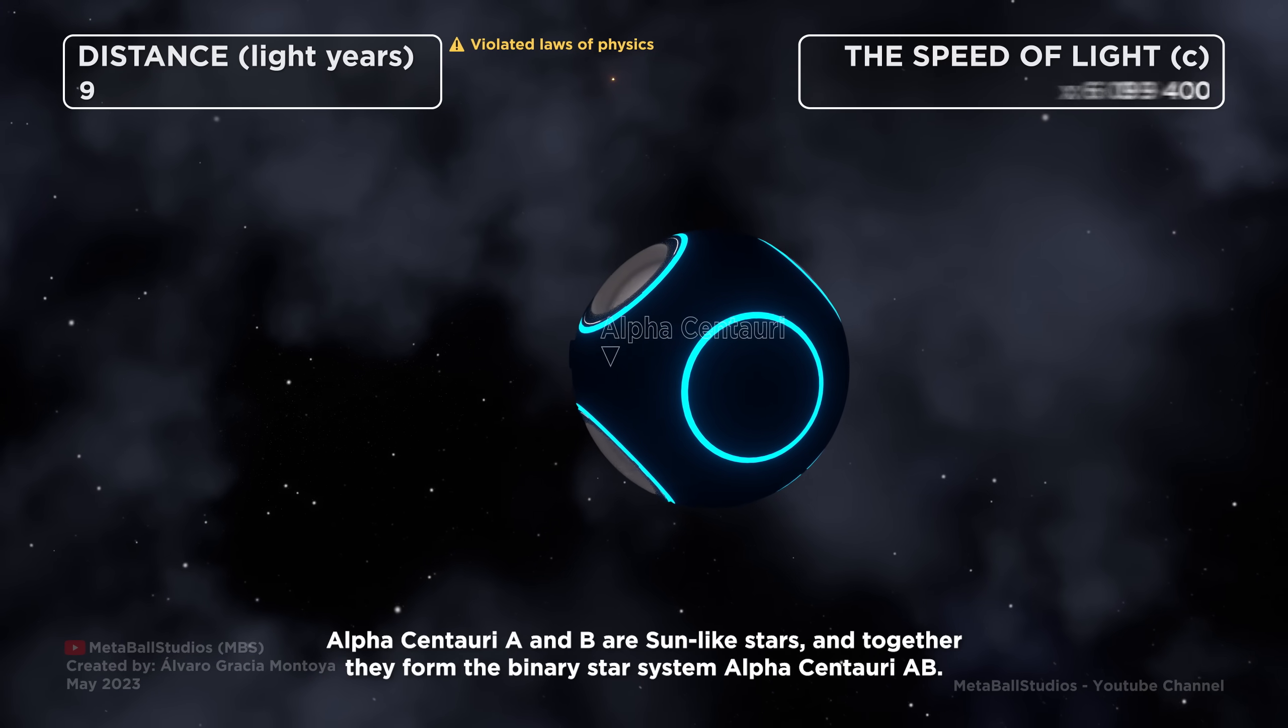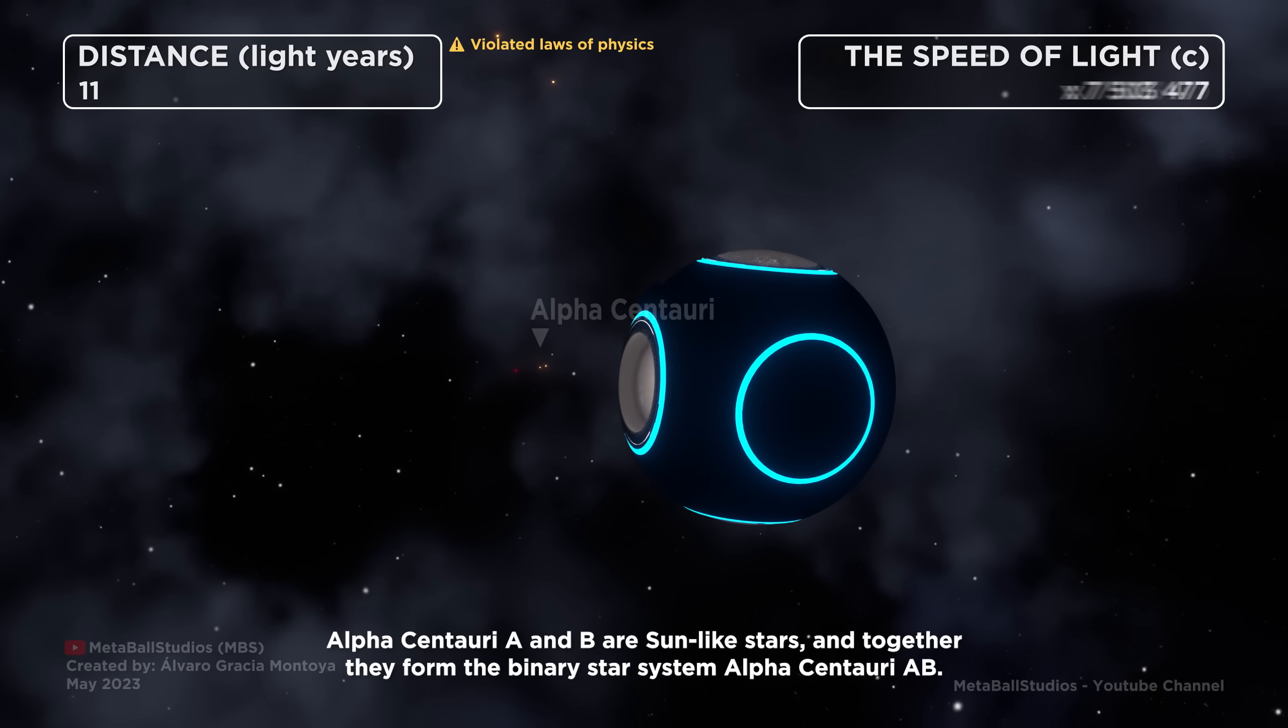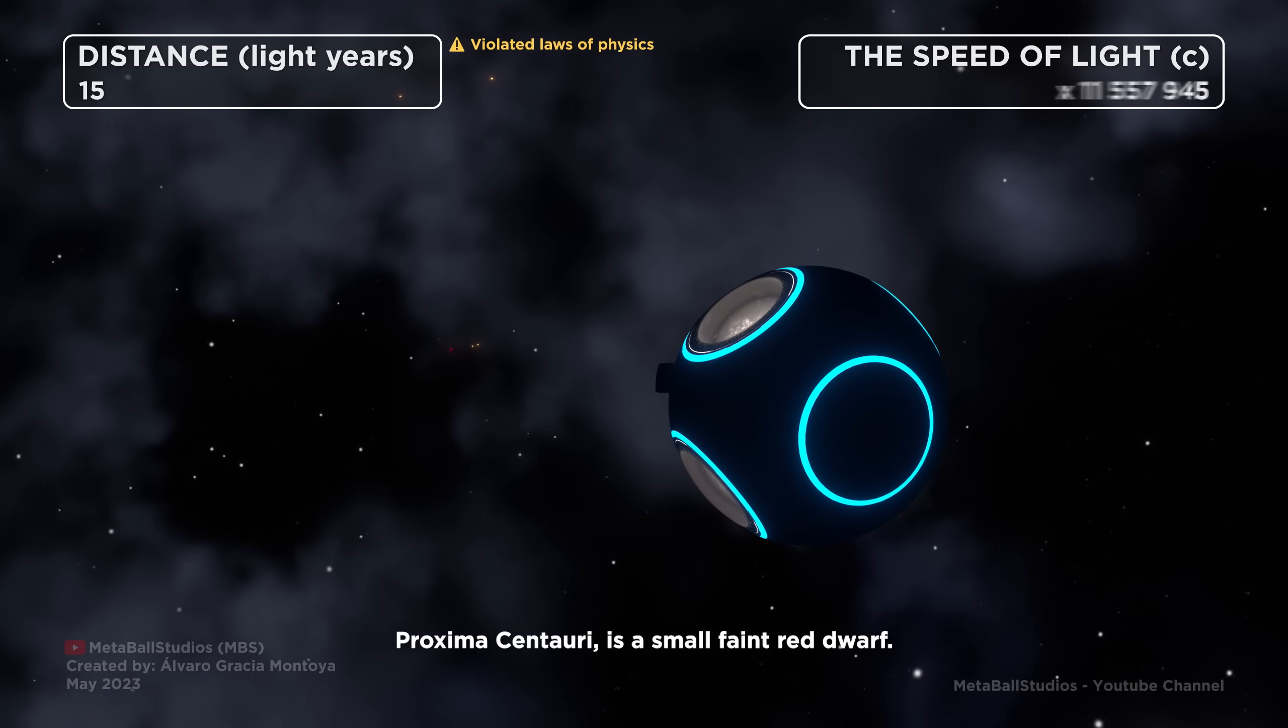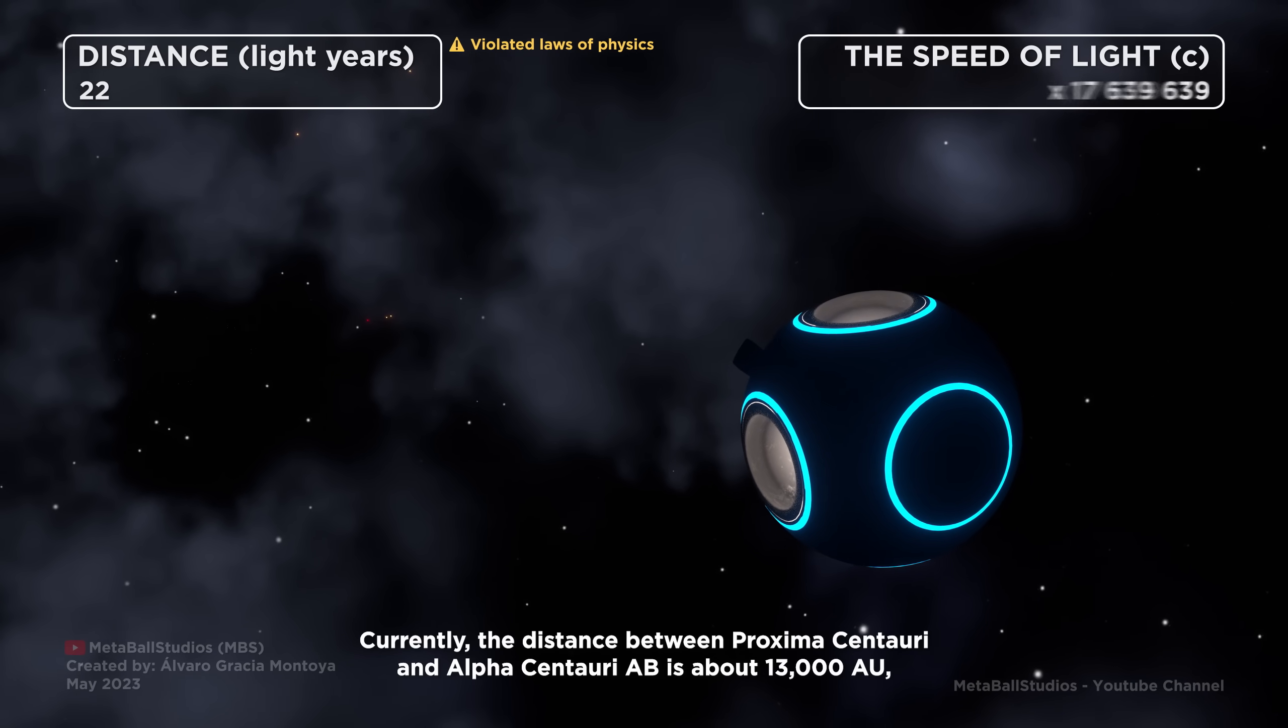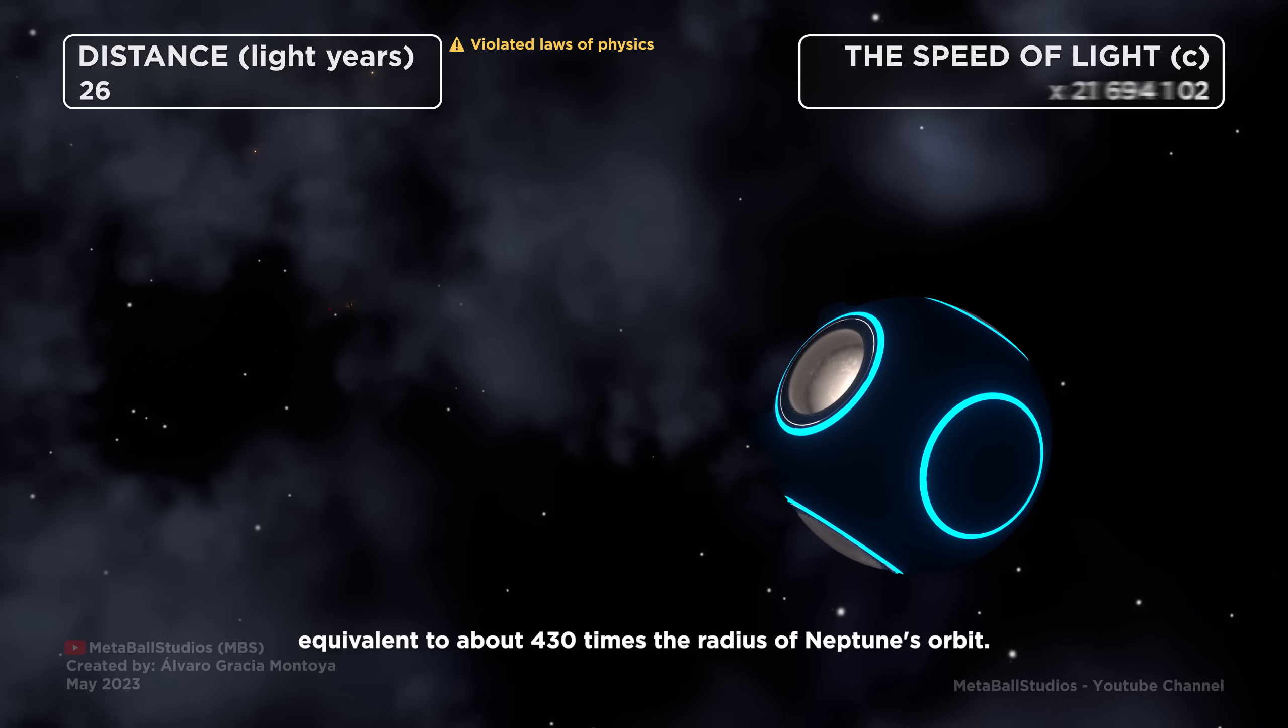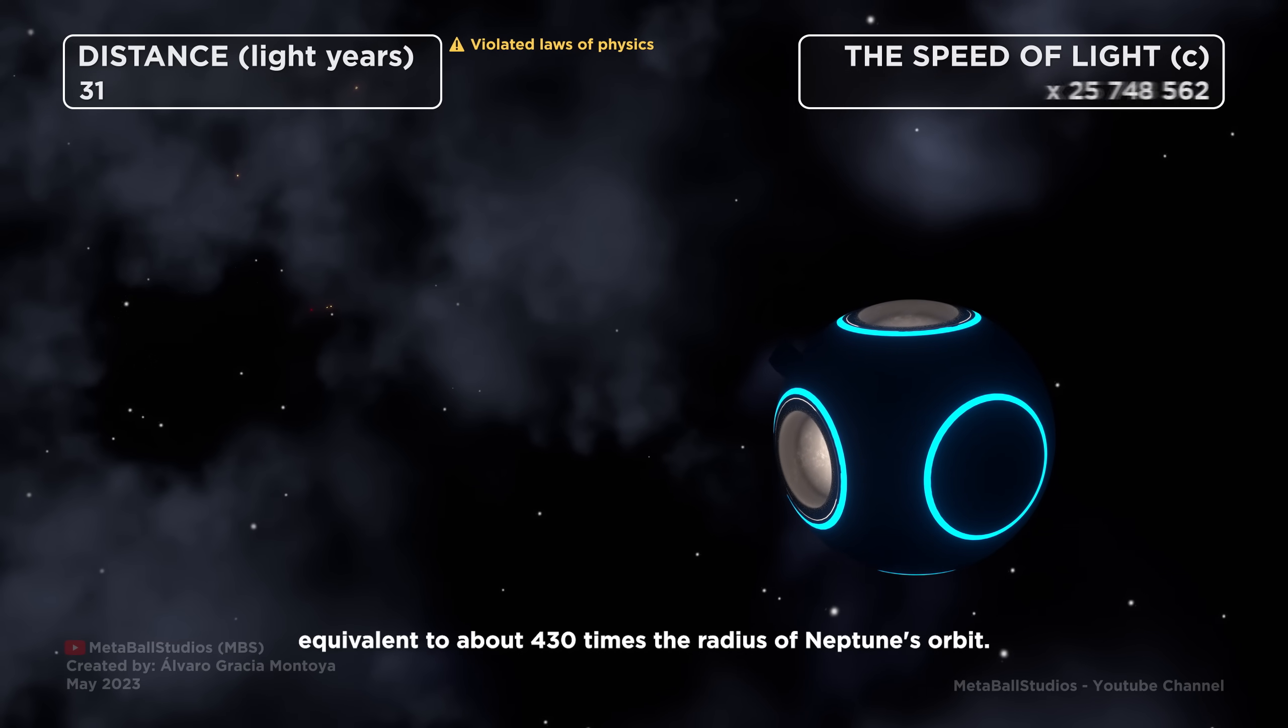Alpha Centauri A and B are Sun-like stars, and together they form the binary star system Alpha Centauri AB. Proxima Centauri is a small faint red dwarf. Currently, the distance between Proxima Centauri and Alpha Centauri AB is about 13,000 astronomical units, equivalent to about 430 times the radius of Neptune's orbit.